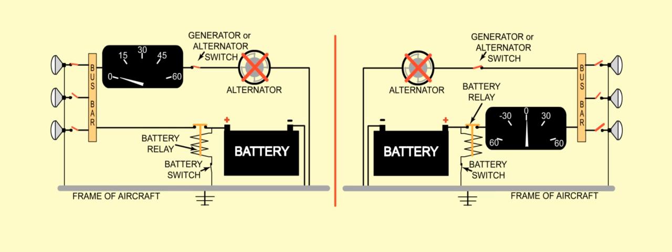And when the generators are not working, the left-zero ammeter reads zero, whereas the center-zero ammeter shows the amount of current being discharged from the battery.